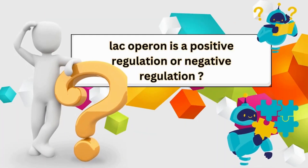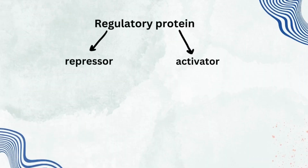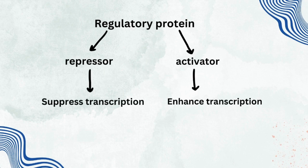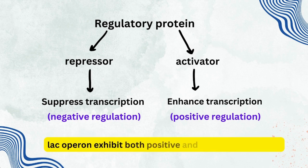Now, whether lac operon is a positive regulation or a negative regulation? The regulatory protein can either be a repressor or activator. If it is a repressor, it will suppress the transcription — that means it's a negative regulation. If it is an activator, it will enhance the transcription — that means it is a positive regulation. So we can conclude that lac operon exhibits both positive regulation as well as negative regulation.